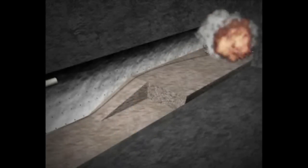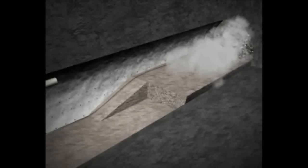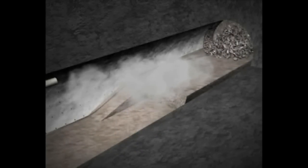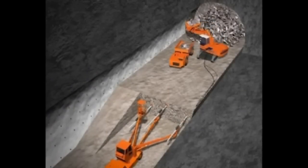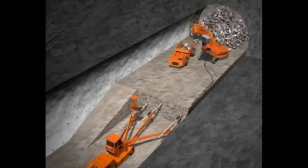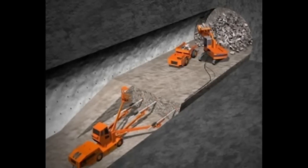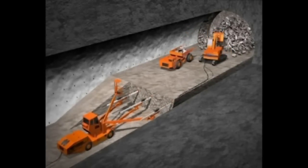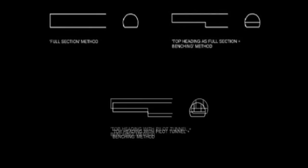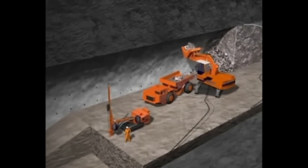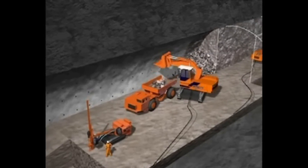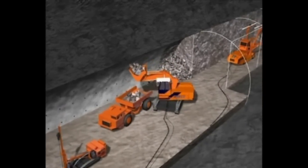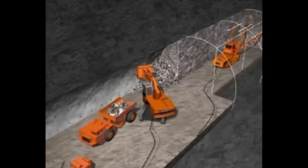To speed up the construction, the main tunnel phase is divided into top heading and bench. Drilling at benching and spoil removal at heading can be done simultaneously. Invert excavation is required in worst geology.